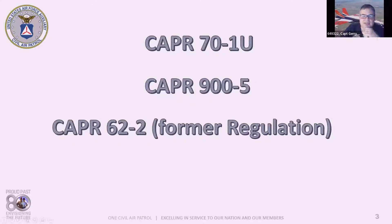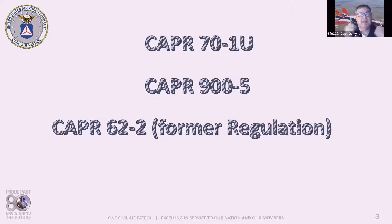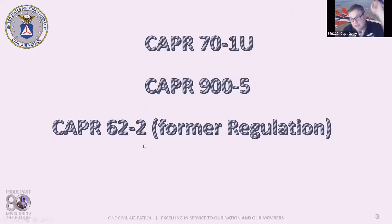CAPR 62-2 on mishap reporting and review was the regulation we had prior to September 30th, 2019. It was replaced with CAPR 160-2. I only mention it here because some pages of the task guide have not been updated — one of those pages still references 62-2. So when you see a reference to that regulation in the task guide, know that you should actually be going to CAPR 160-2.